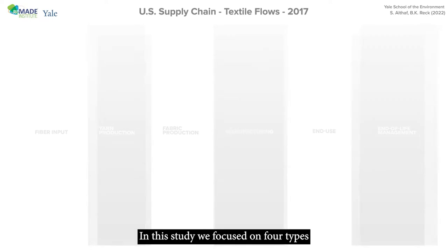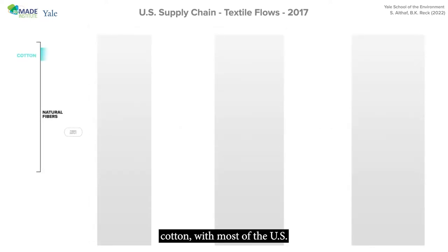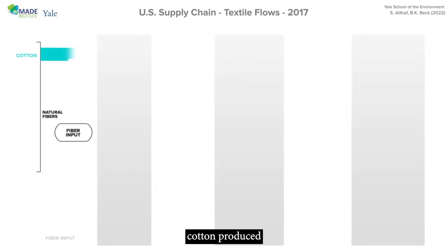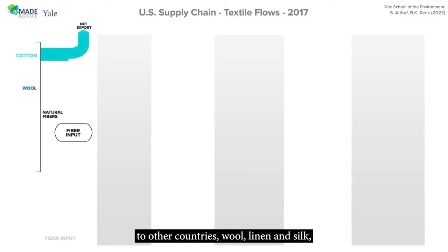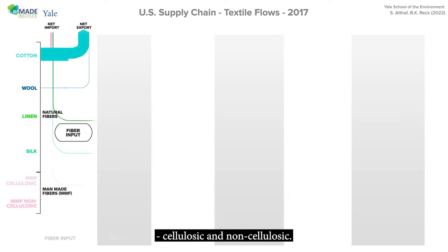In this study, we focused on four types of natural fibers: cotton, with most of the U.S. cotton produced having been exported to other countries; wool; linen; and silk. We also examined two types of man-made fibers: cellulosic and non-cellulosic.